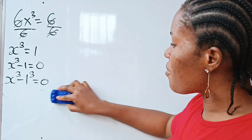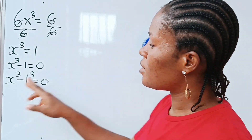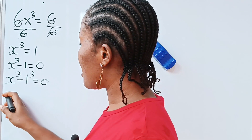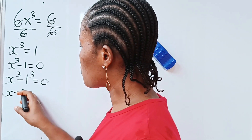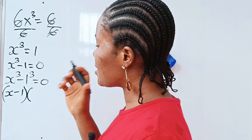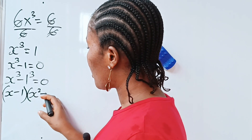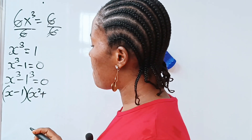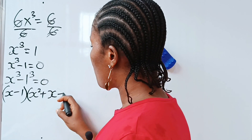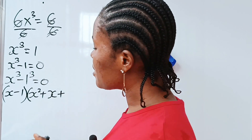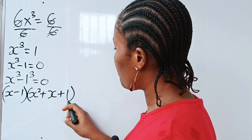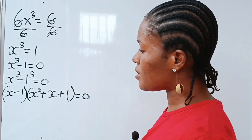Now, if we also note that x³ - 1³ = 0, we can write this as x minus 1, multiplied by x squared plus x times 1, which is x, plus 1 squared, which is 1, all equal to 0.